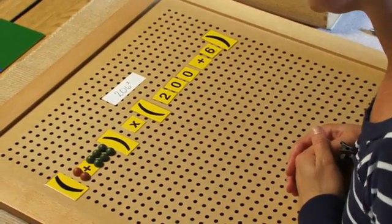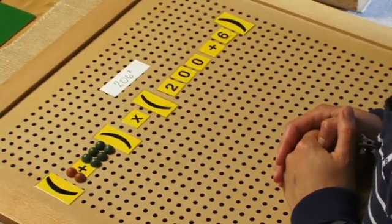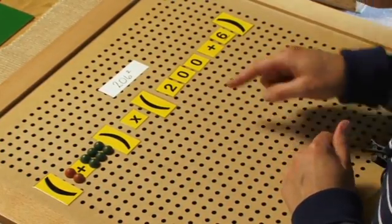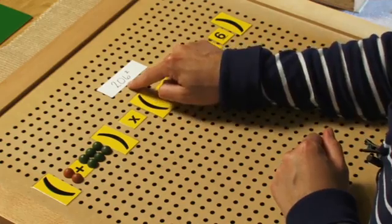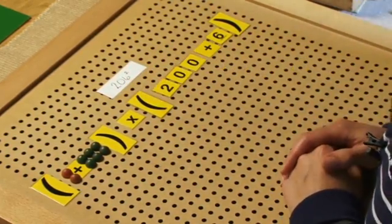This is special cases. For this example, we're using the number 206 squared. I'll be working with the students to help figure out how we can represent the zero in the tens place.